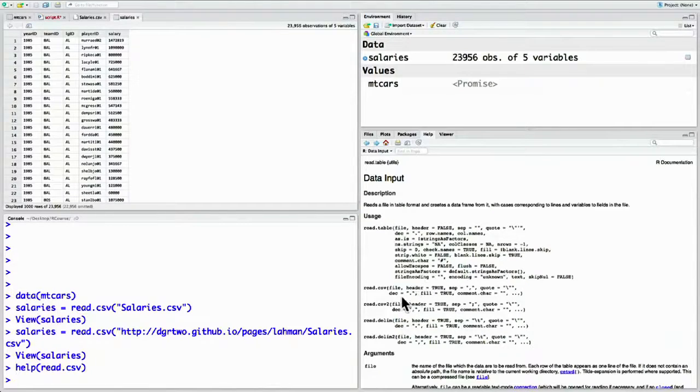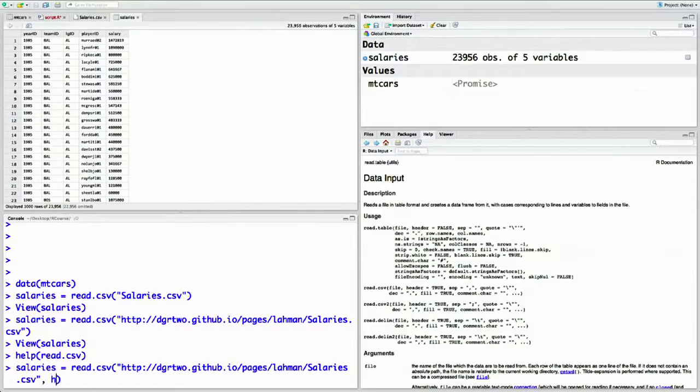For example if you didn't want, if you want to add a header you would change the header option. You could do salaries read dot csv and then say header equals false. If you wanted them to be separated by spaces instead of commas you would do sep equals space. Tell it how the fields are divided. So don't do that in this case.